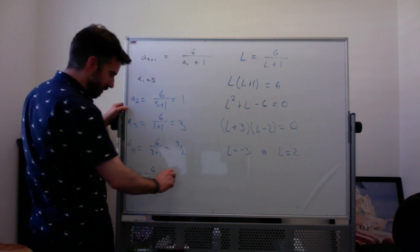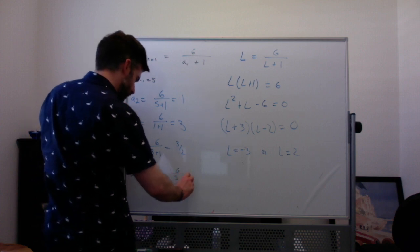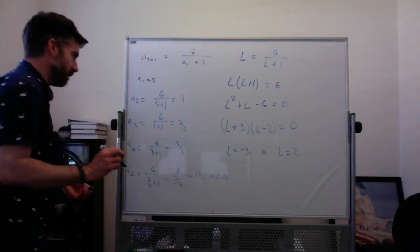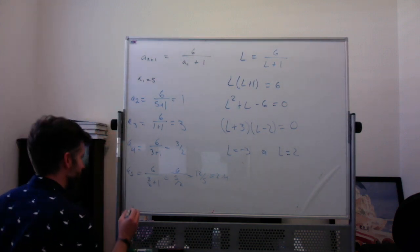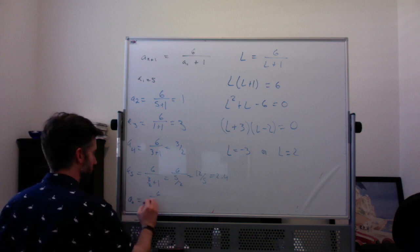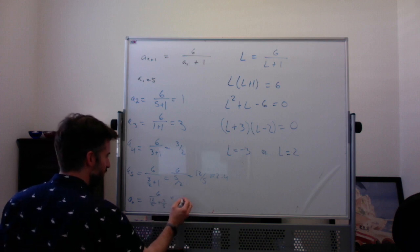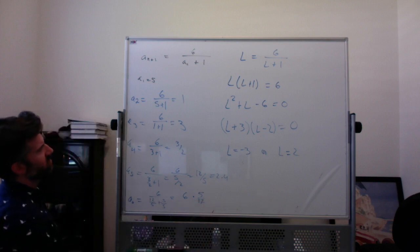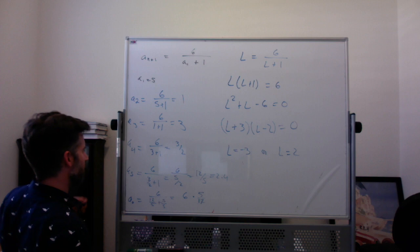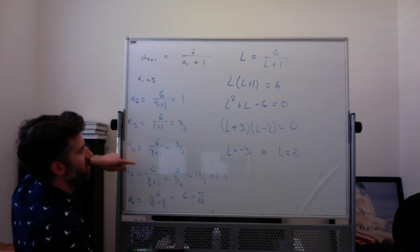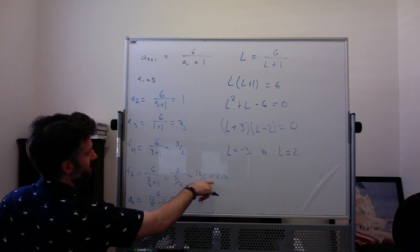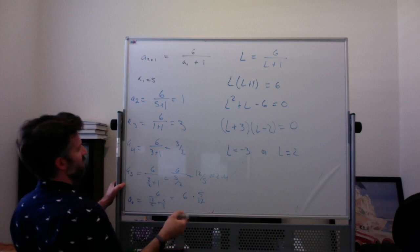So although I don't want to keep doing this because it's kind of a pain, you could keep doing it. A sub 6 would be 6 over 12 fifths plus 1, plus 1 is 5 fifths. So that would be 6 over 17 fifths, which is 6 times 5 17ths, which is not what I was hoping to get, actually. Let me double check my working real quick. 12 fifths. Yeah, okay. Sorry, I'm just making sure this isn't crazy.